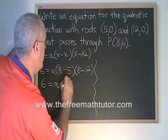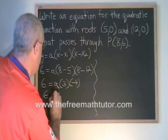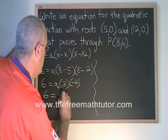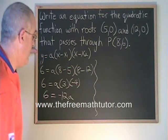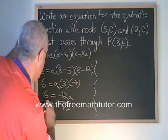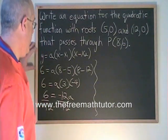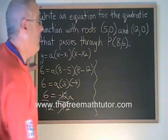8 minus 5 is 3. 8 minus 12 is negative 4. And that simplifies to 6 equals negative 12a. Divide both sides by negative 12 and we find that a is equal to negative 1/2.